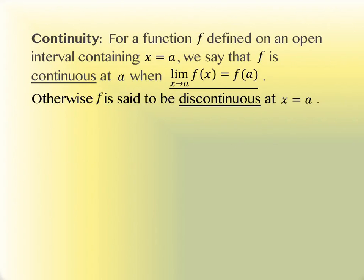So thinking about that, our actual definition of continuity says the following. For a function f defined in an open interval containing x equals a, we say that f is continuous at a when the limit of the function is actually equal to the function of the x value a. In other words, when we are able to plug in the value, or when the limit exists at the value. And if that happens, then it's continuous.